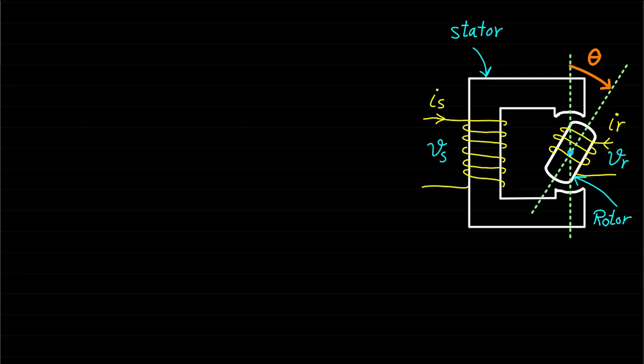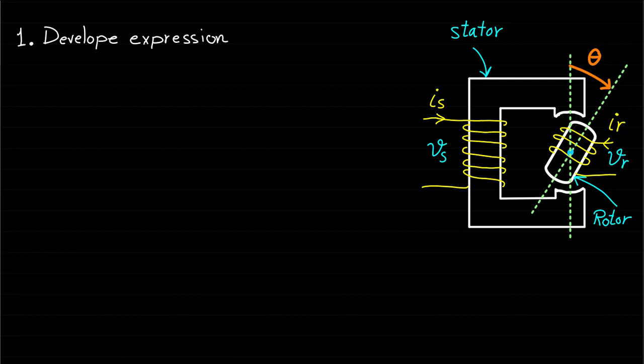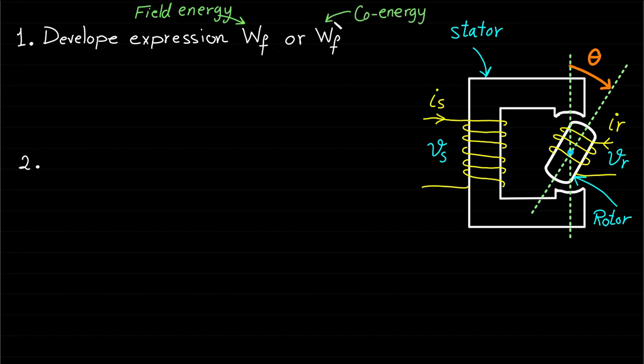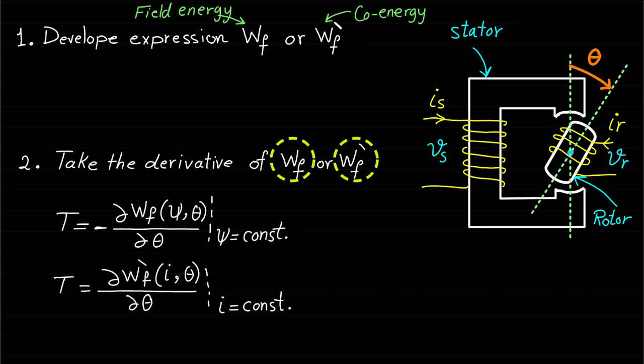The procedure of developing the torque of double excited systems is similar to the procedure for single excited systems. Basically, to develop the torque of this double excited system, we need first to develop an expression for the field energy Wf or co-energy Wf dash, and then take the derivative of the field energy with respect to the rotor position theta.